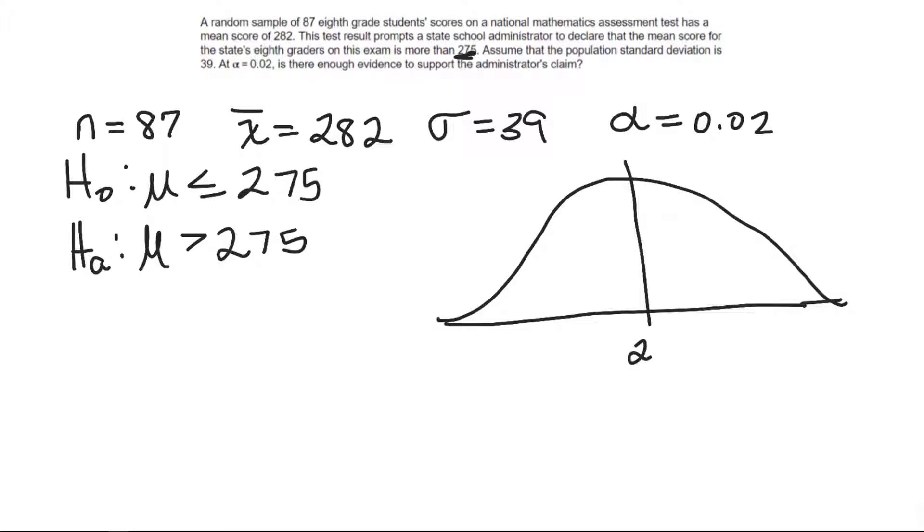So this is what they're saying has been the average. We went out and we got a sample. So we went out and we got a sample and it's 282. We want to know, is that far enough away? What's far enough away?